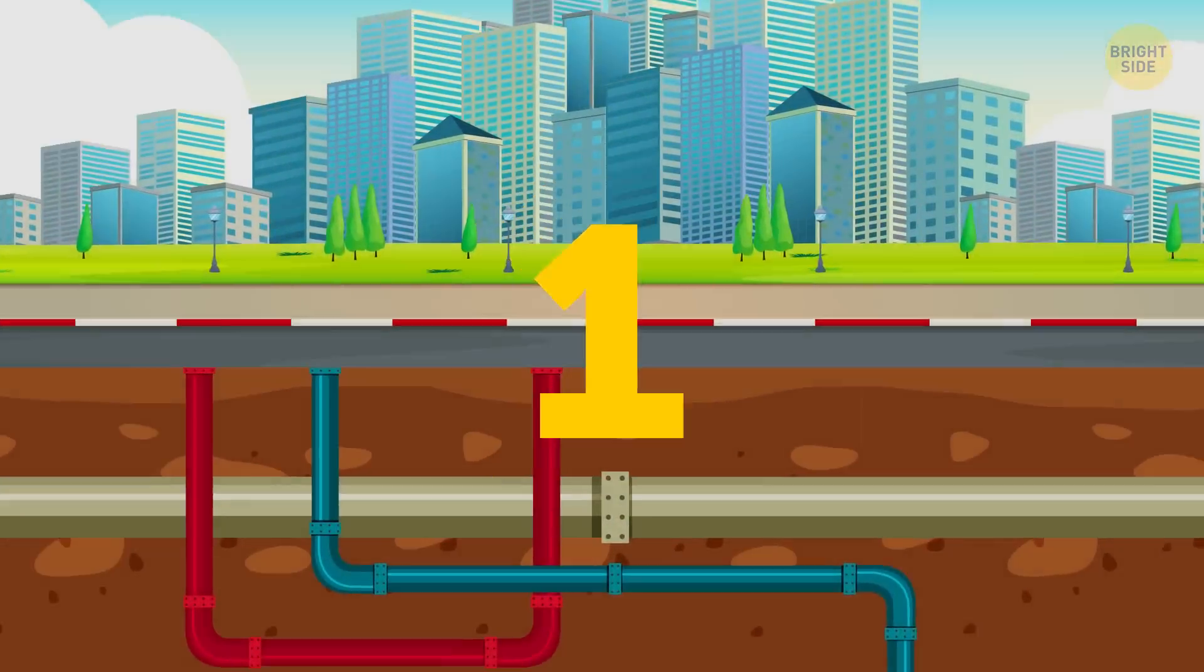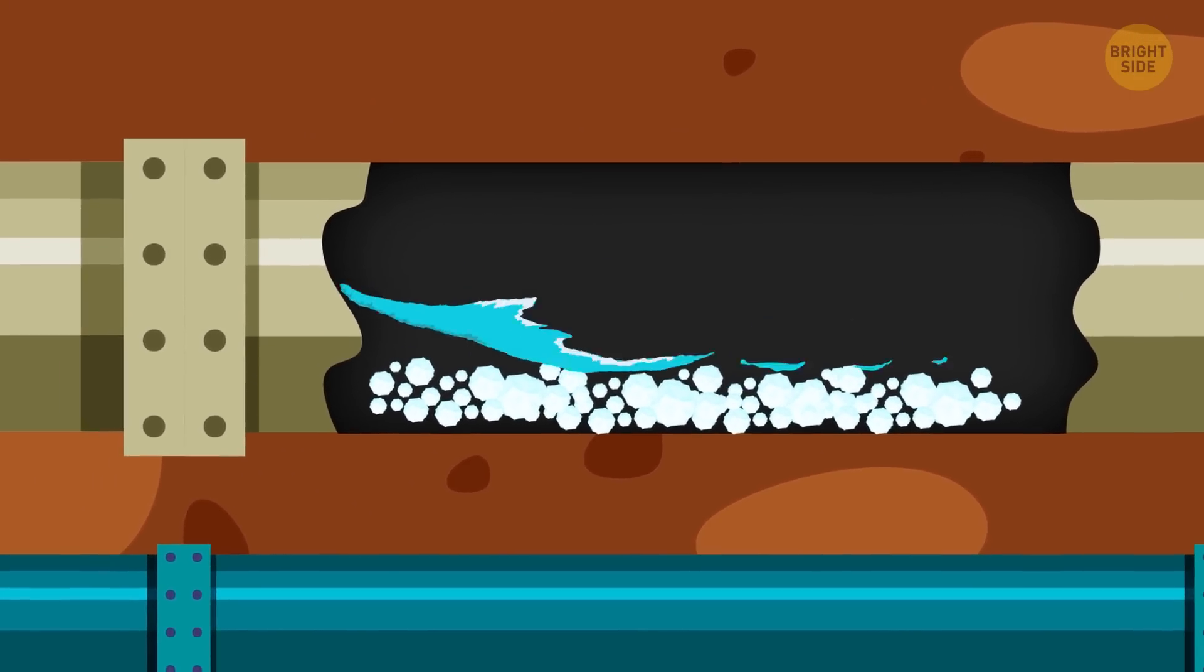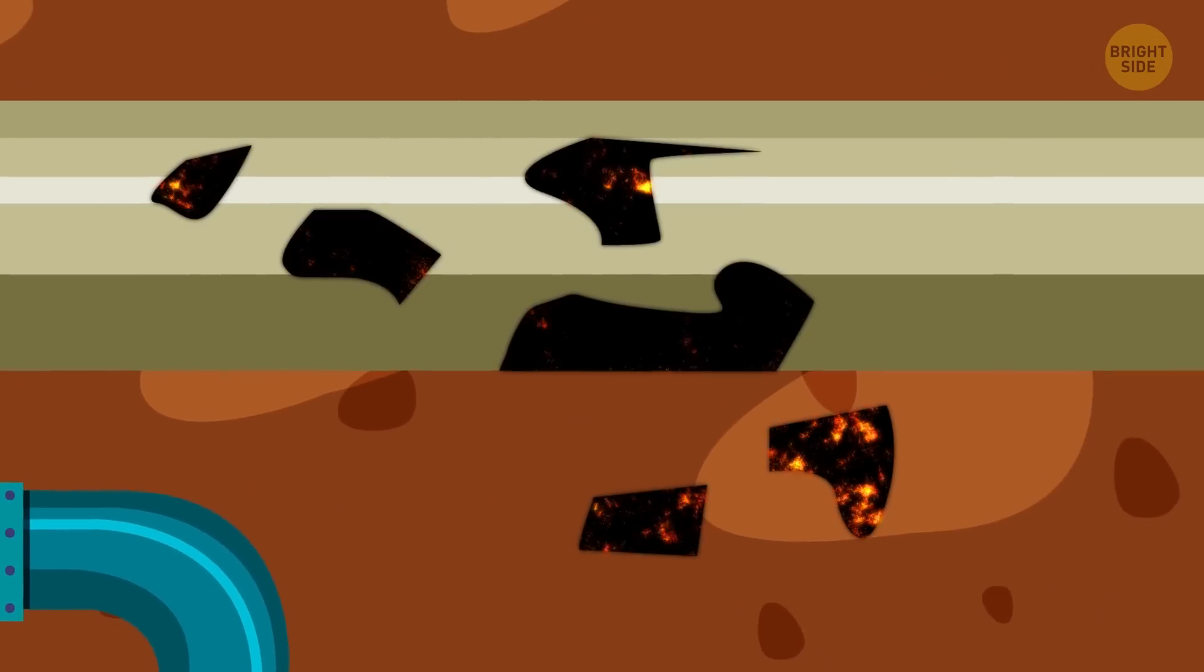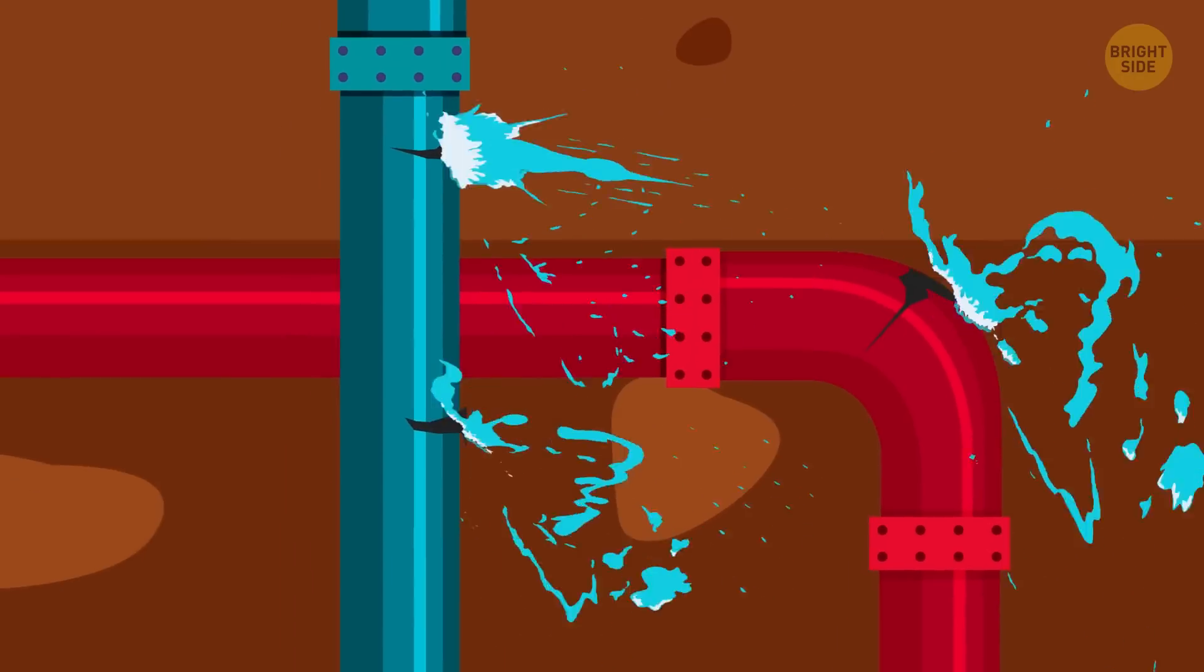First of all, salt from the water will begin staying behind as a residue, just like that salt on your skin. Now, you can wash it away, but still the salt is corrosive. Metal, clay, and concrete all eventually give up to it, and pipes burst.